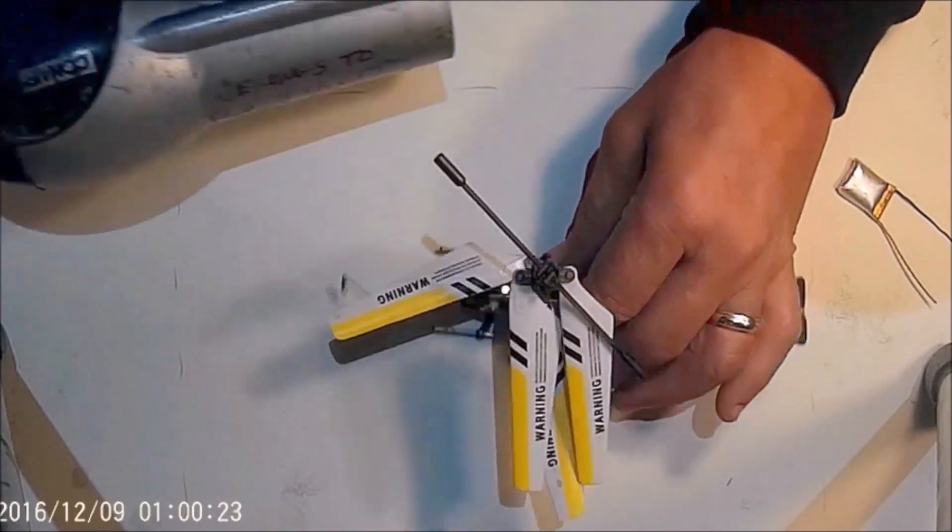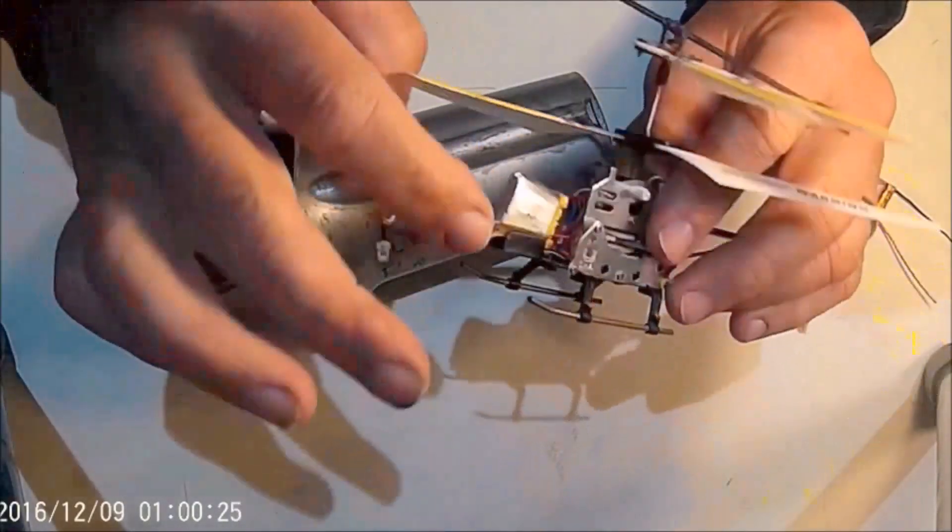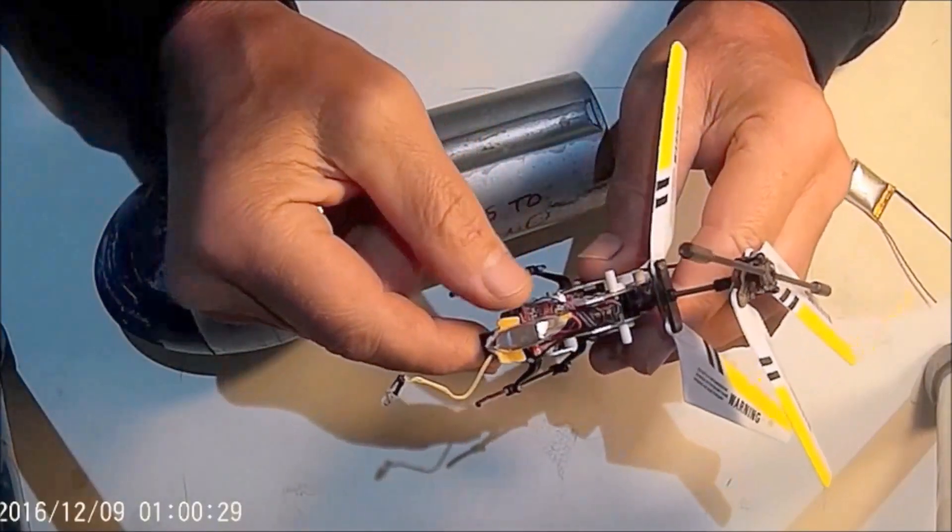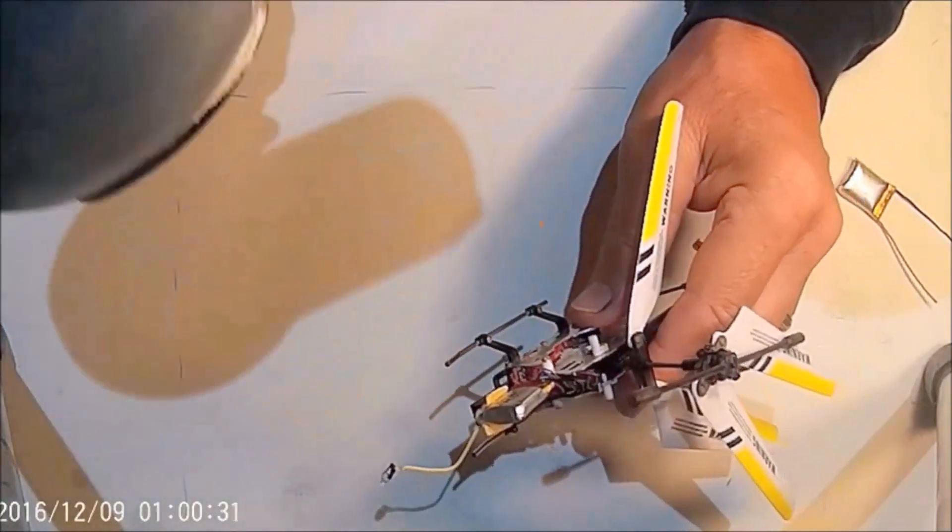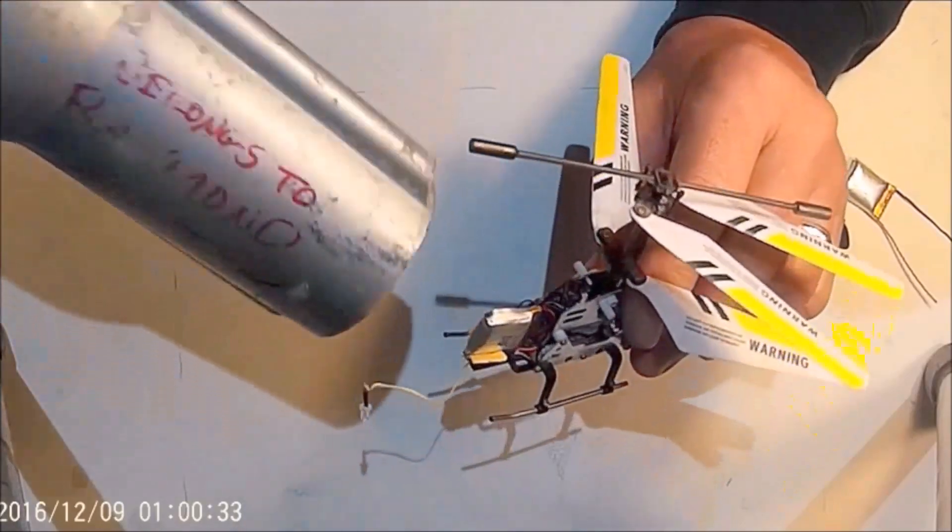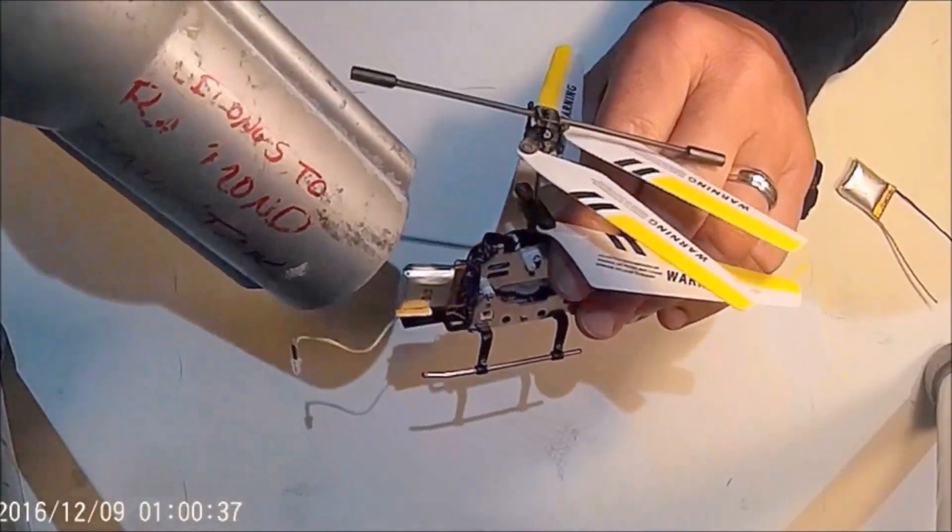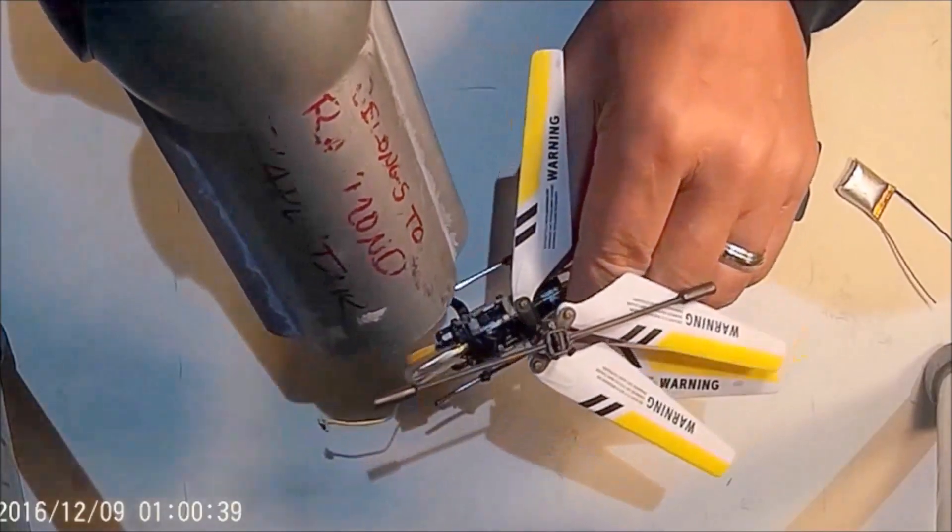Now we're gonna go ahead and heat up this adhesive so we can pull the battery off and not damage the little holder. This is just a standard hair dryer. Let's put a little bit of heat on it. We'll soften up the adhesive, and we'll be able to reuse it again. It doesn't take very long.